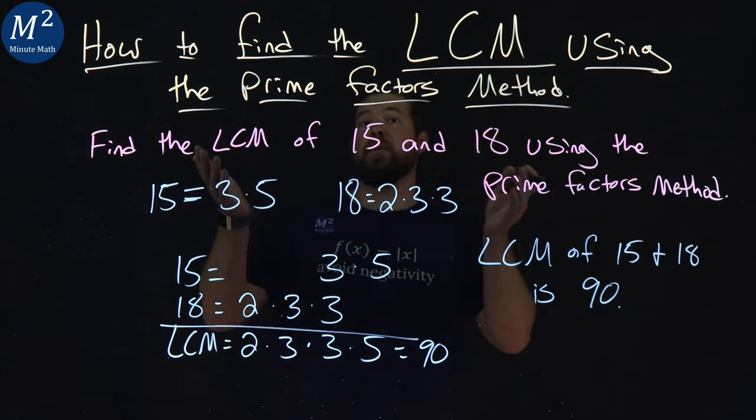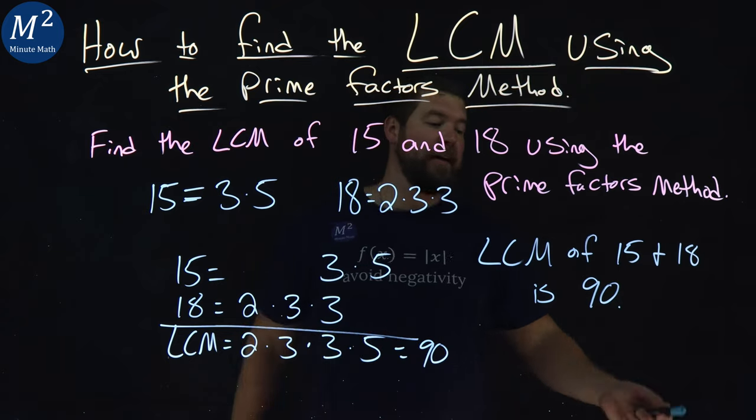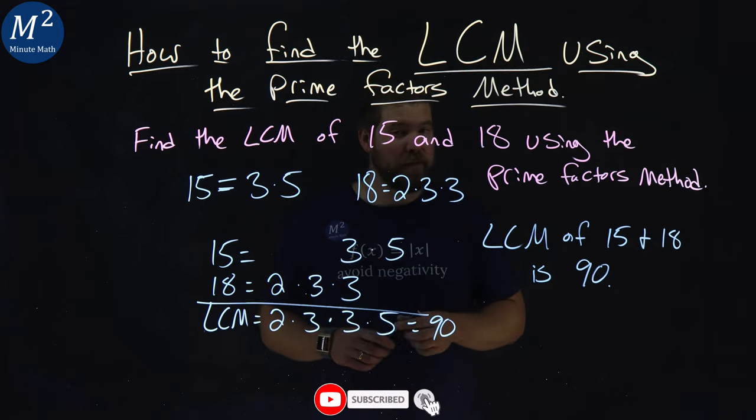So we used the prime factors method to find the LCM of two numbers, 15 and 18, and got 90. Hope you learned something here on how to find the LCM using the prime factors method.